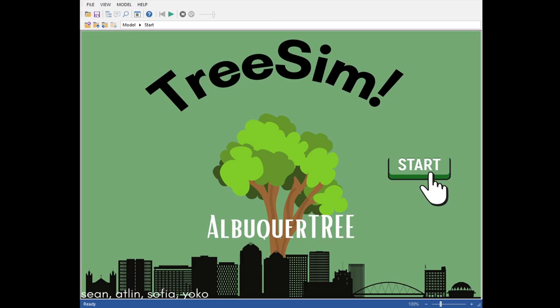Hello, my name is Atlin and today we're going to be going over how to play TreeSim. First of all, you have to open the file with GoldSimPlayer, which you'll have to download from online. Once you do that, you can open up the file and then you can click on the Start button.